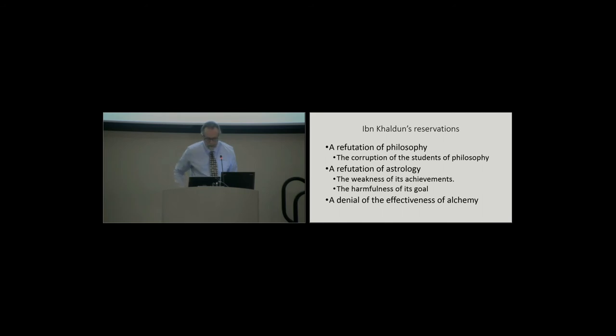Then, he pauses to say what's wrong with all of these, and he has a refutation of philosophy where he tells you where the philosophers are wrong. And then, rather unusually for his time, he refutes both astrology and alchemy as fraudulent enterprises, which need to be rejected. He does this on religious and ethical grounds.